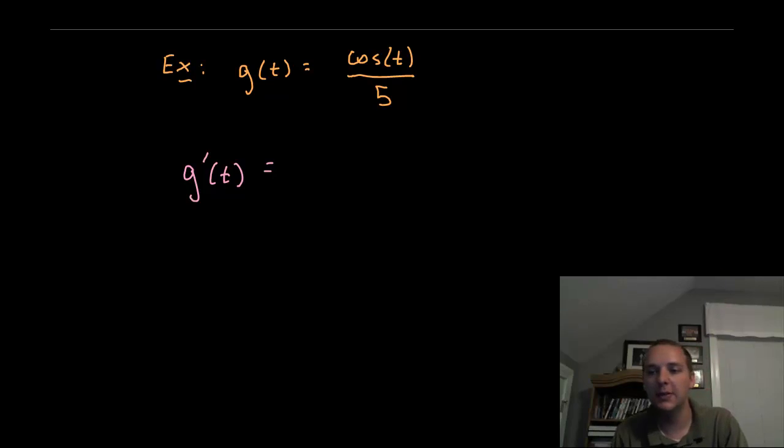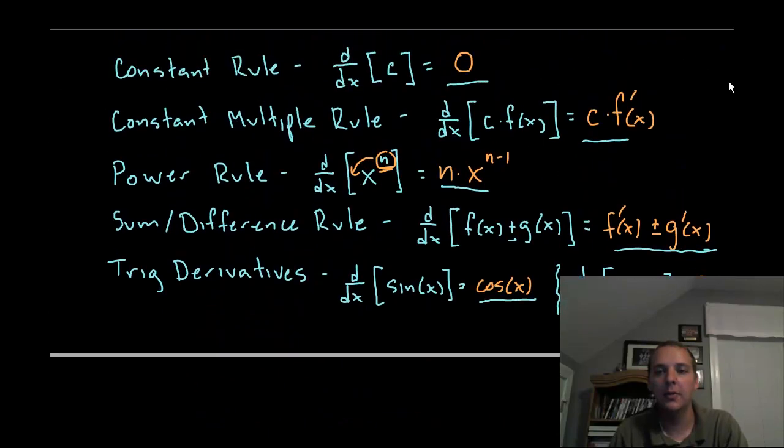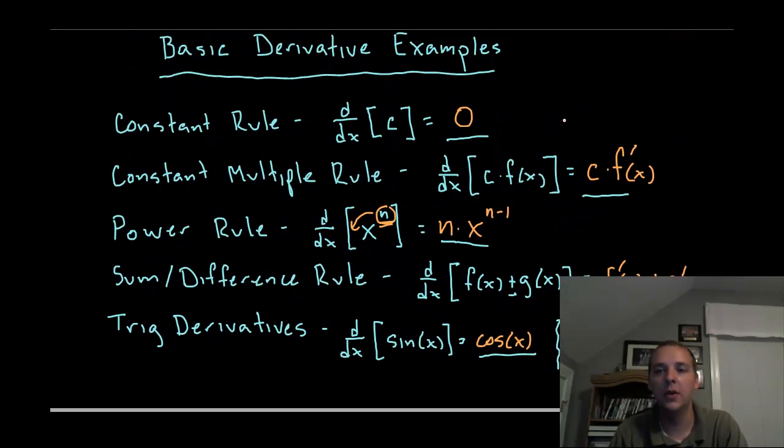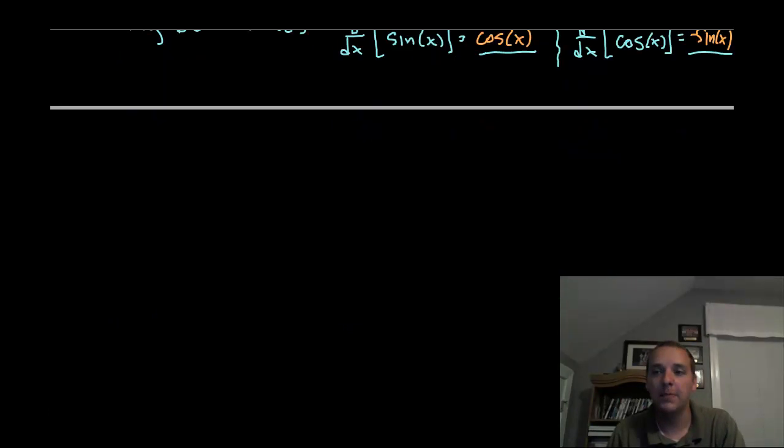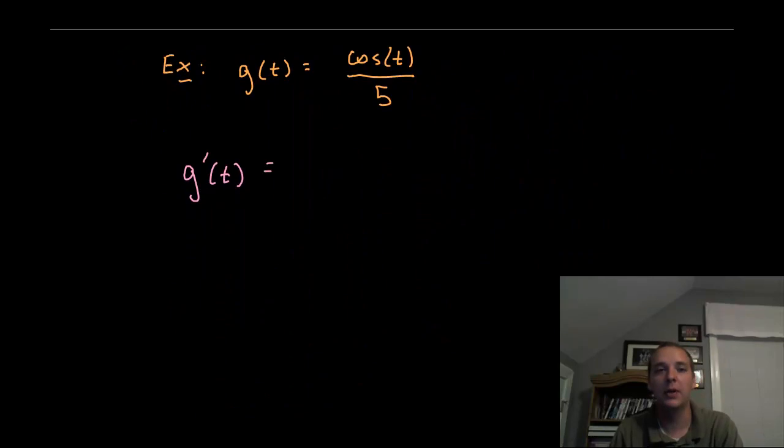This one on the surface doesn't seem to fit any of our basic rules because if you saw the end of the basic derivative rules video at the end I explained what we did not currently have rules for and one of these that I'm missing is what happens when you have a fraction. So on the surface it doesn't look like we'll be able to differentiate this with one of our basic rules.